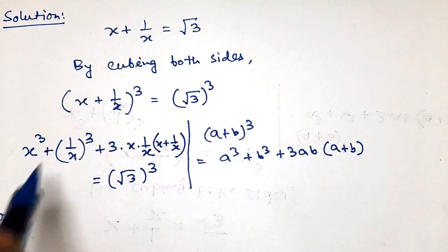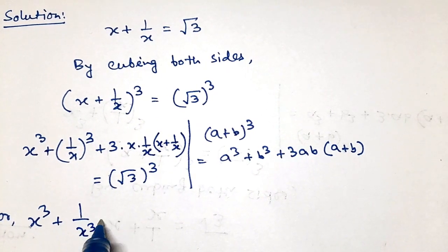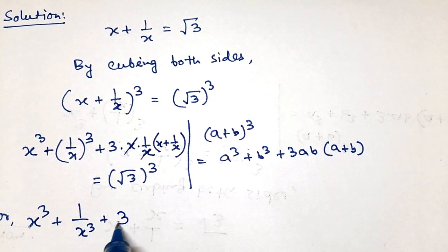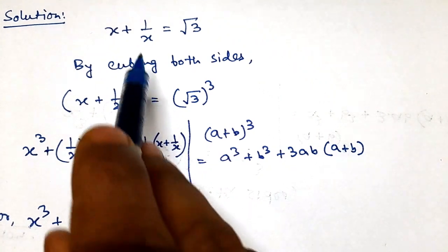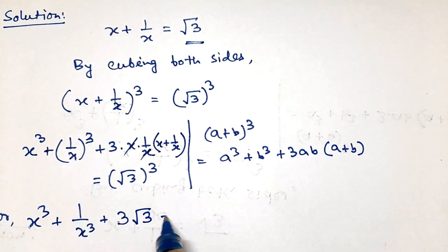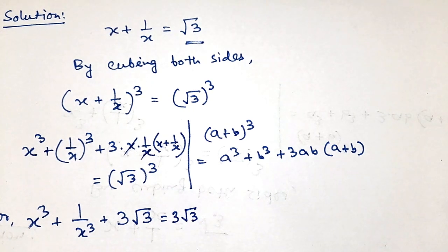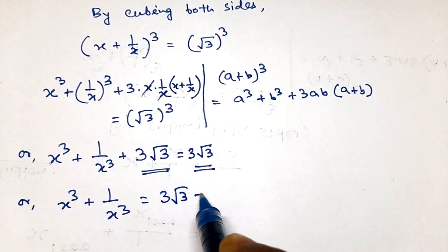From this we can write x³ + 1/x³ plus — the x and x cancel out — so this will be 3, and this x plus 1 by x we already have as root 3. So this will be 3 times root 3. And root 3 cubed means root 3 times root 3 times root 3, that is 3 times root 3. So x³ + 1/x³ equals 3 root 3.